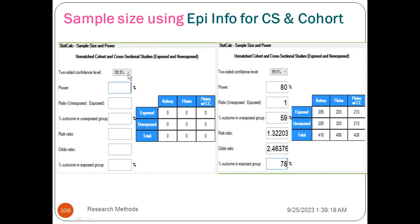The first factor is power. The ratio of unexposed to exposed is a key parameter. The outcome of the unexposed group is needed. This ratio of risk ratio and percent of outcomes is important. The value of the continuity correction is also considered.